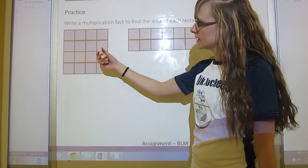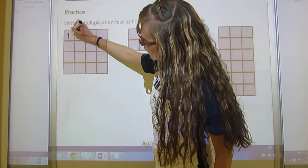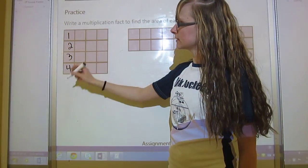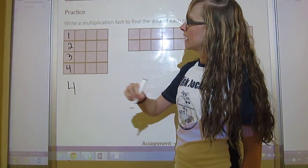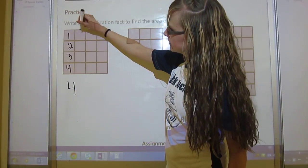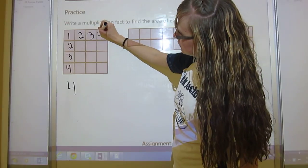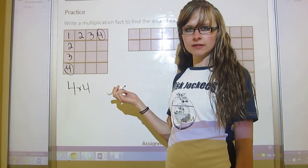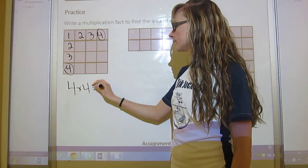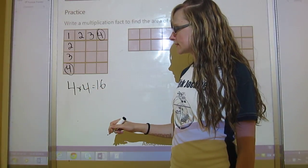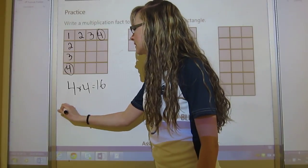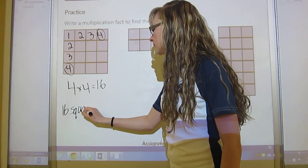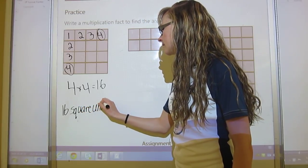So like I did before, you can go one, two, three, four, and see that there are four rows. So we write four. And how many columns? There's one, two, three, four. There are four columns. So I can find the area of this by going four times four, and that equals 16. But it doesn't just equal 16, it equals 16 square units.